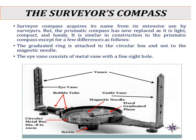The surveyor compass acquires its name from its extensive use by different surveyors. The prismatic compass has now replaced it as they are lighter, more compact and handy. The surveyor compass is similar in construction to the prismatic compass with a few differences: the graduated ring is attached to the circular box and not to the magnetic needle. The eye vane consists of a metal vane with a fine slit hole, whereas in the case of the prismatic compass, a prism is attached to record the bearing of the line.